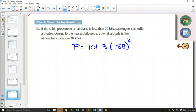So here we have the cabin pressure in an airplane is less than 70. Passengers can suffer altitude sickness. To the nearest kilometer, at what altitude is the atmospheric pressure 70? So what do we know in this case? We know the pressure, so we can put 70 in, and we want to solve for k.